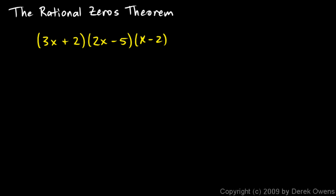We're still talking about the rational zeros theorem, and I'm going to use this example to go over a little bit more theory. 3x+2 times 2x-5 times x-2. If we multiply all of this out, this will be a polynomial, and we will multiply it all out in just a minute, but first, when it's in factored form like this,